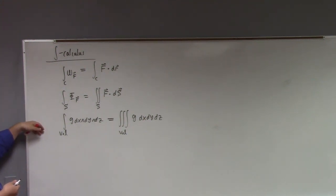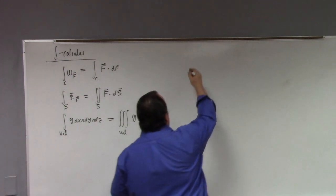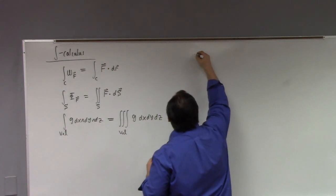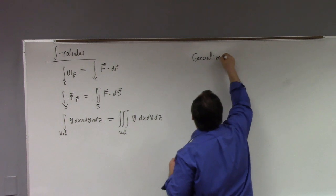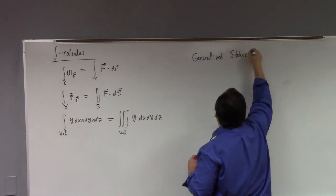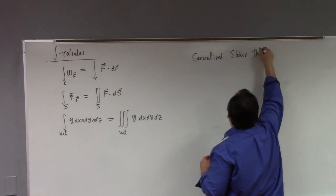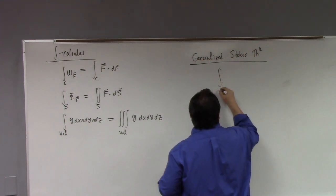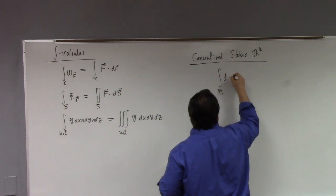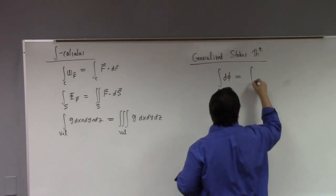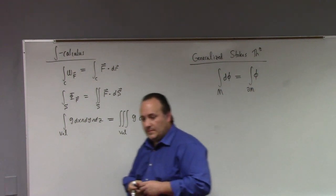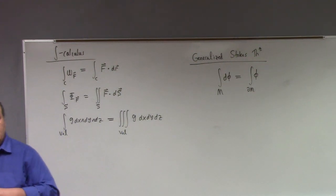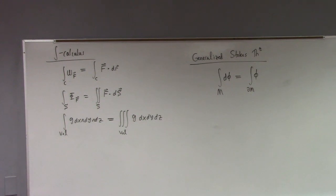There's one theorem that binds them all — the generalized Stokes theorem. It simply says: the integral over a space of the differential of a form equals the integral over the boundary of the space of the form. This single statement reproduces the fundamental theorem of calculus for line integrals, Green's theorem, Stokes' theorem, and the divergence theorem.